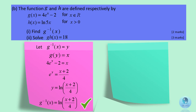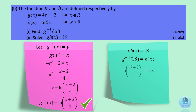For g(h(x)) equals 18, the inverse function of g applied to 18 equals h(x). Substitute 18 into the inverse function of g(x), and you get the natural log of (18 plus 2) divided by 4 equals the natural log of 5x. Hence, we get x equals 1.